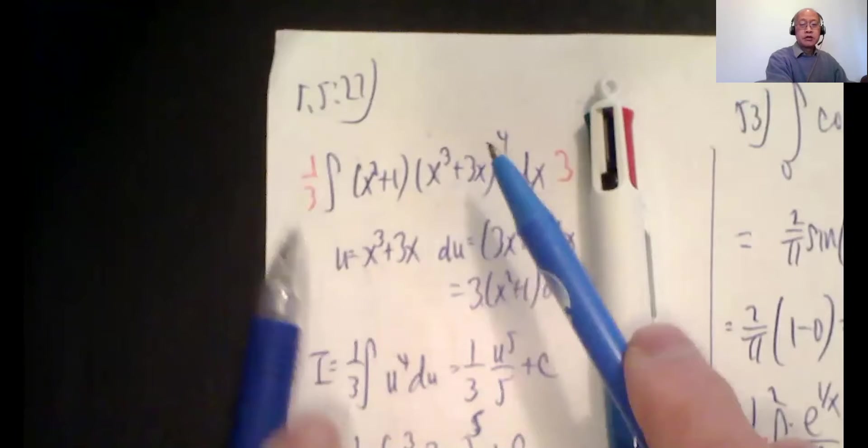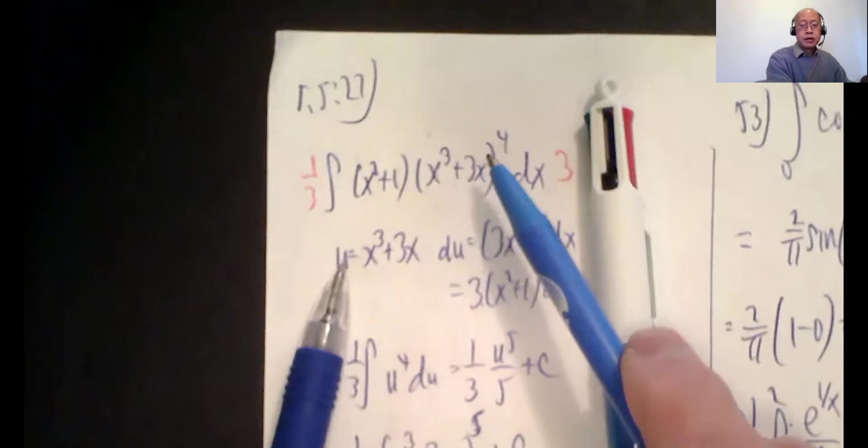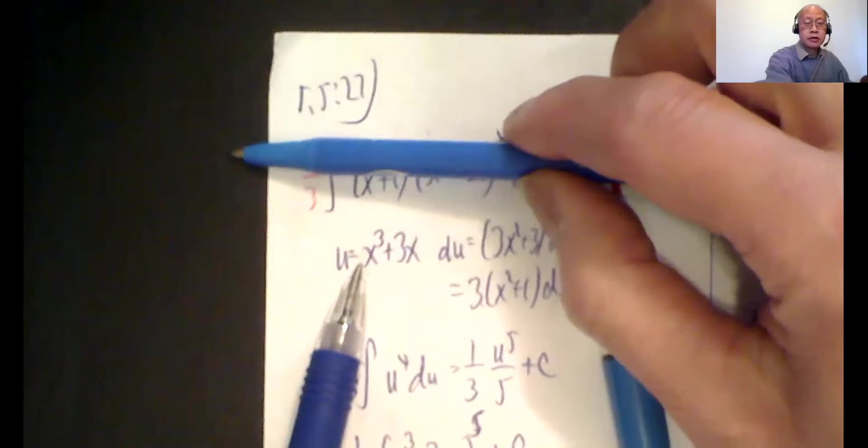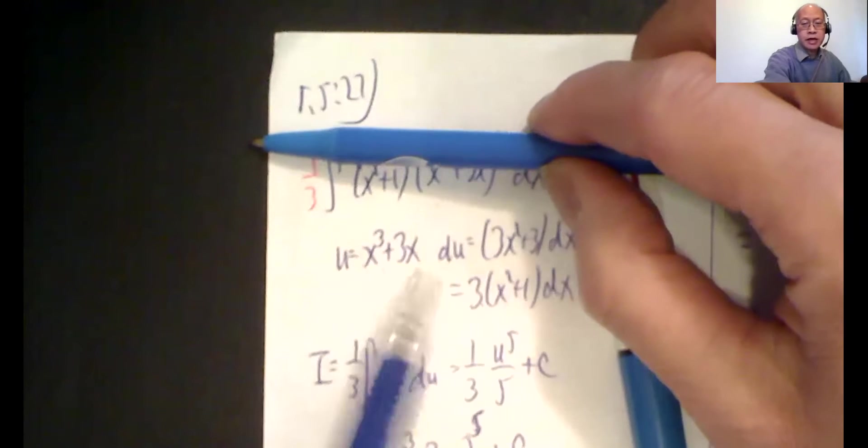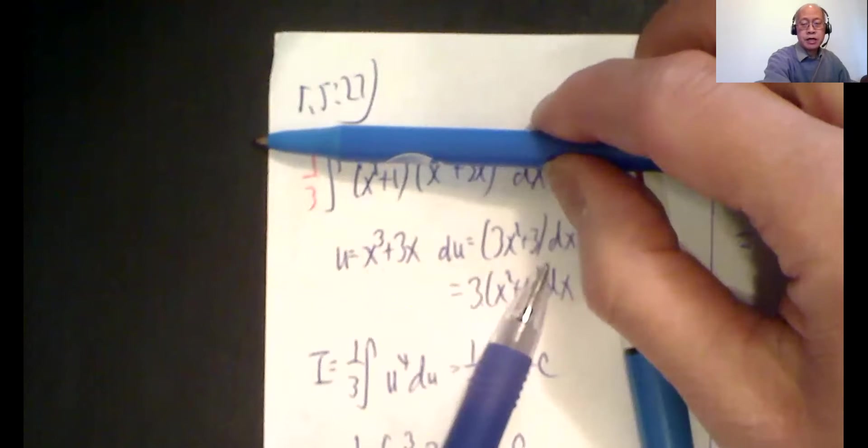The integral of x squared plus one times x cubed plus 3x to the fourth power dx. Now you should know the way it works. The derivative of third degree is second degree. So that pretty much tells you how to set it up. Let u be this. Let u be x cubed plus 3x. And then what is the derivative? So it's like, ignore this now. What's the derivative of x cubed plus 3x?